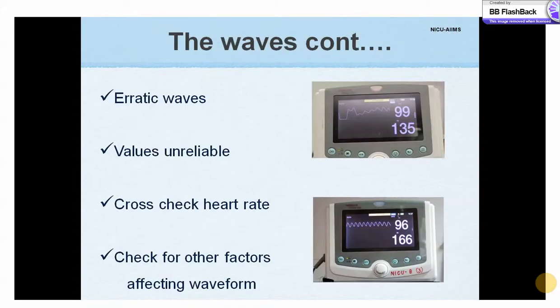If the waves are not uniform, the values displayed are likely to be erroneous. A practical approach is to cross-check the heart rate of the baby with the displayed value — they should match within 10% of each other. The causes of non-uniform waves could be many and should be corrected before attributing any significance to the displayed values.